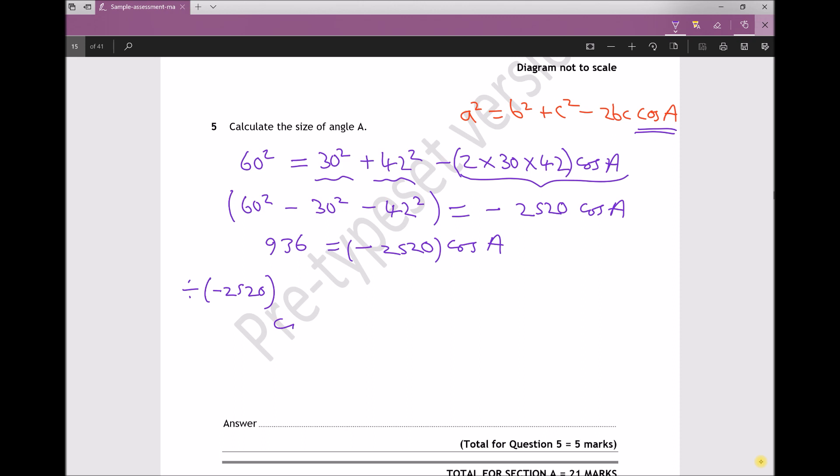What I'm going to get is cos A equals 936 over minus 2520, or cos A equals minus 0.3714 accurate to 4 decimal places. Now what I'm going to do next is take cos to the minus 1 of that answer, because cos to the minus 1 is the inverse of cos. That's how I get A on its own.